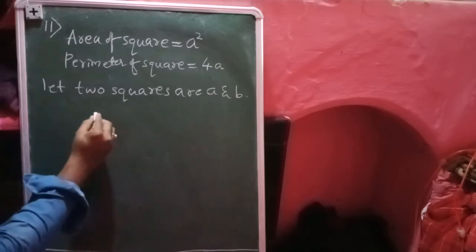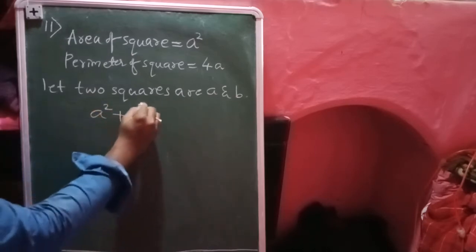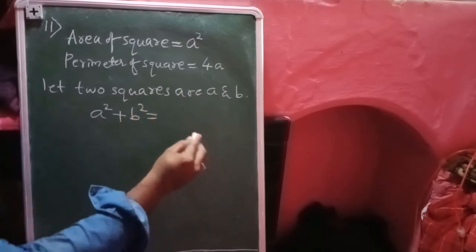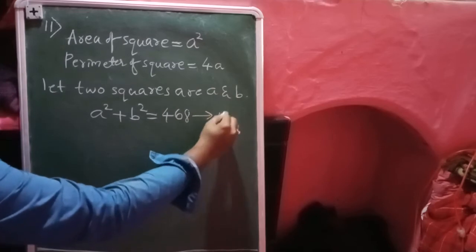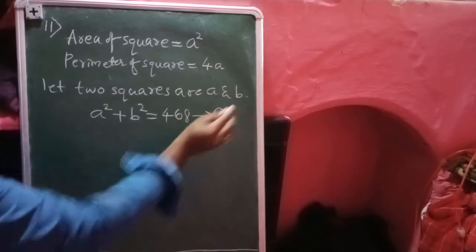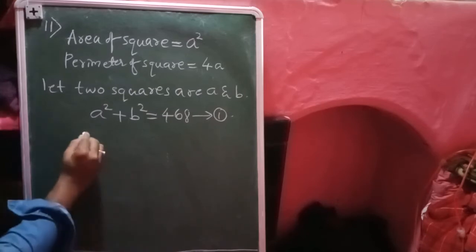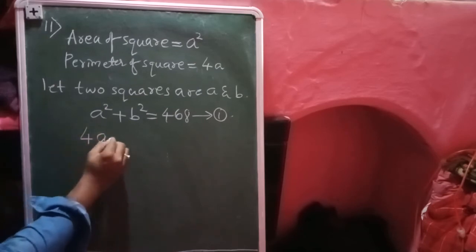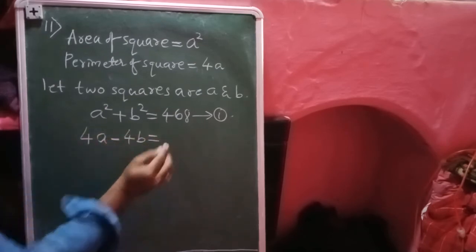What they have given: the sum of areas of two squares — sum means plus — so a² + b² = 468. I'll call this equation number one. Next, the difference of their perimeters: one perimeter is 4a and the other is 4b, so difference means 4a minus 4b.